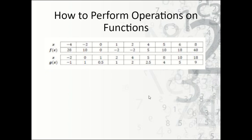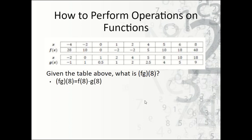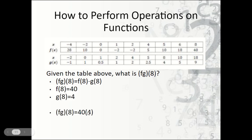Let's see another example. This time we have fg of 8. fg just means multiplication, so we break it up as f of 8 times g of 8. F of 8 is 40, and g of 8 is 4. We multiply these together: 40 times 4 is 160.